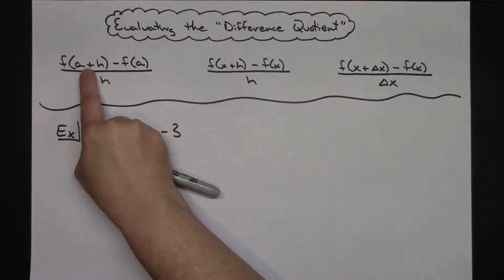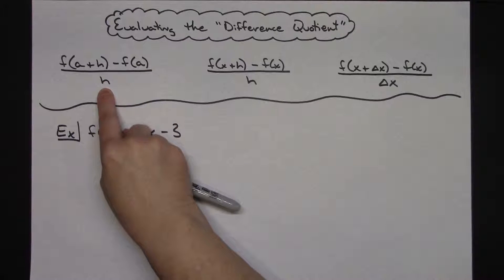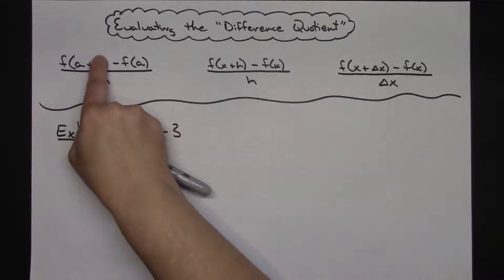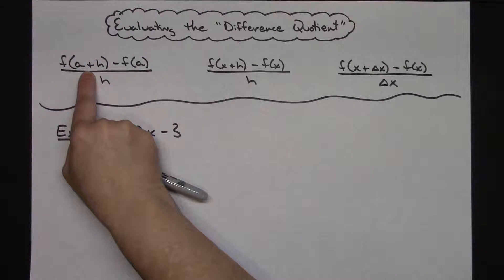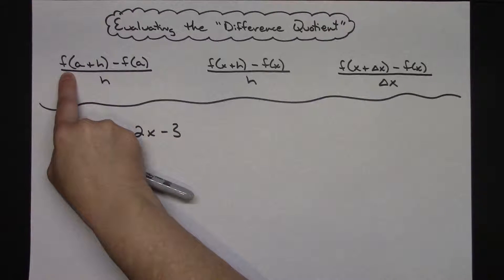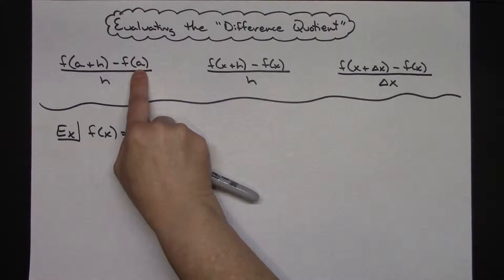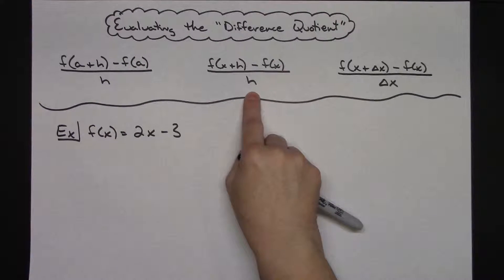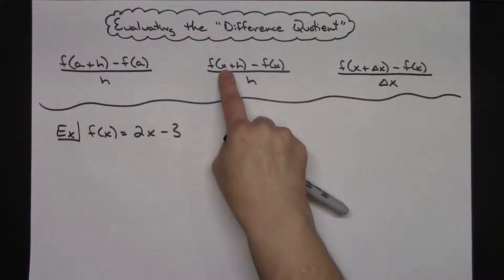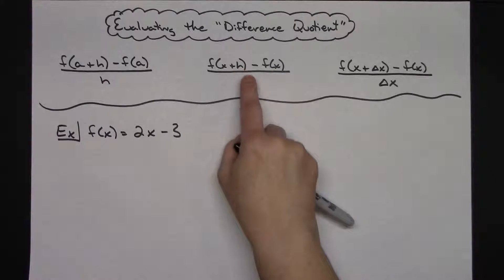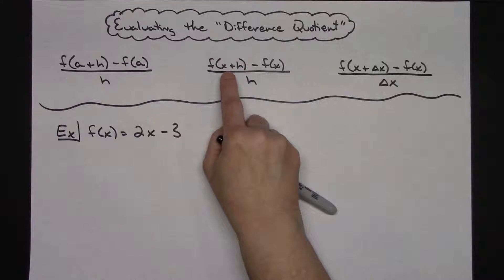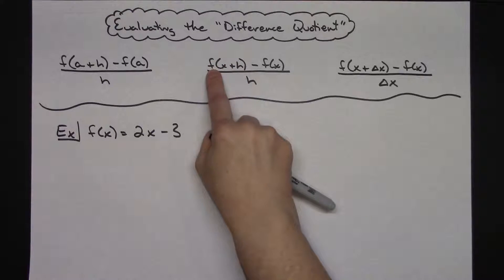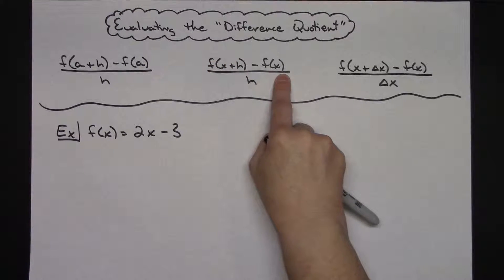In this first formula they're using a+h, a, and h as variables. You are plugging a+h into the function f, then subtracting the function when a has been plugged in, and dividing by h. In the second formula the variables are swapped to x's but the h's are kept, so you plug x+h into the function and subtract f of x.